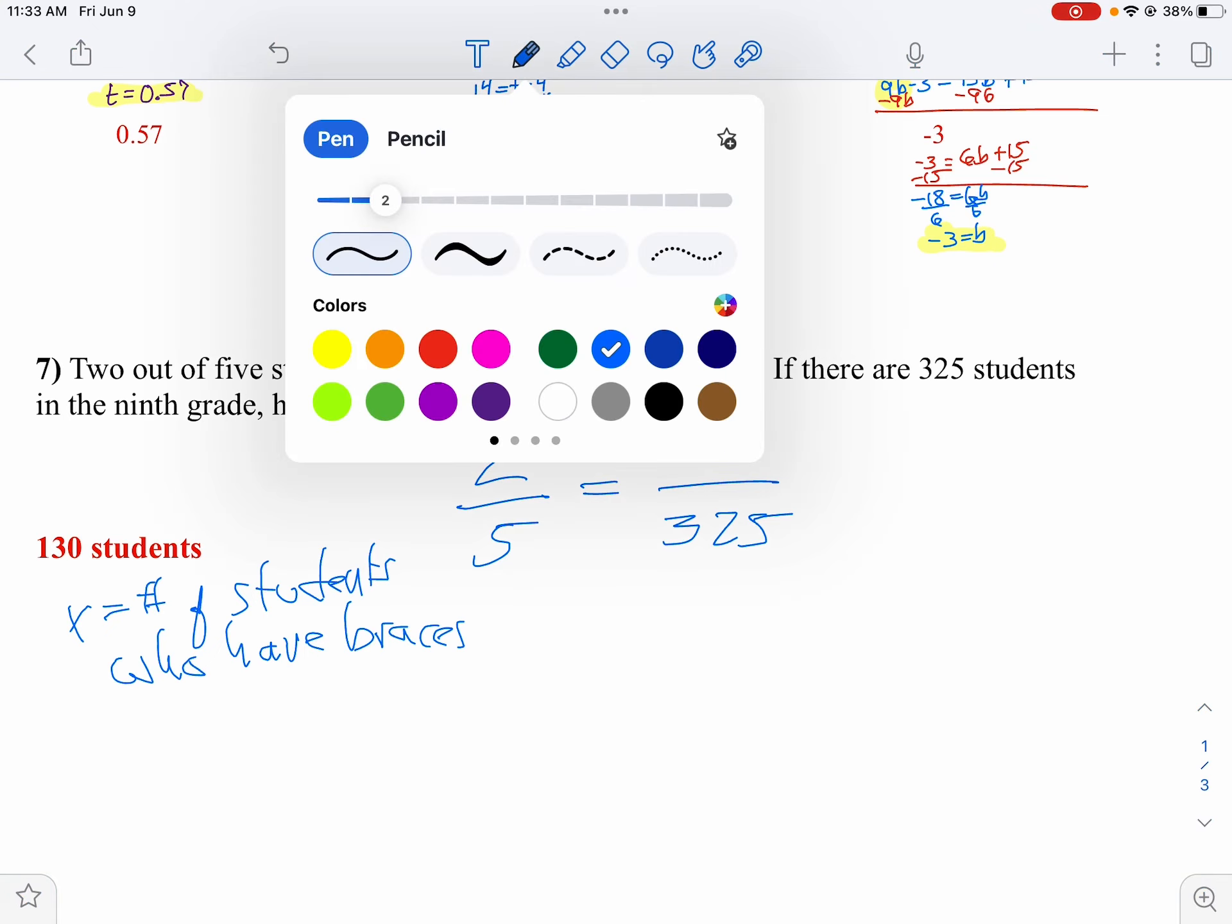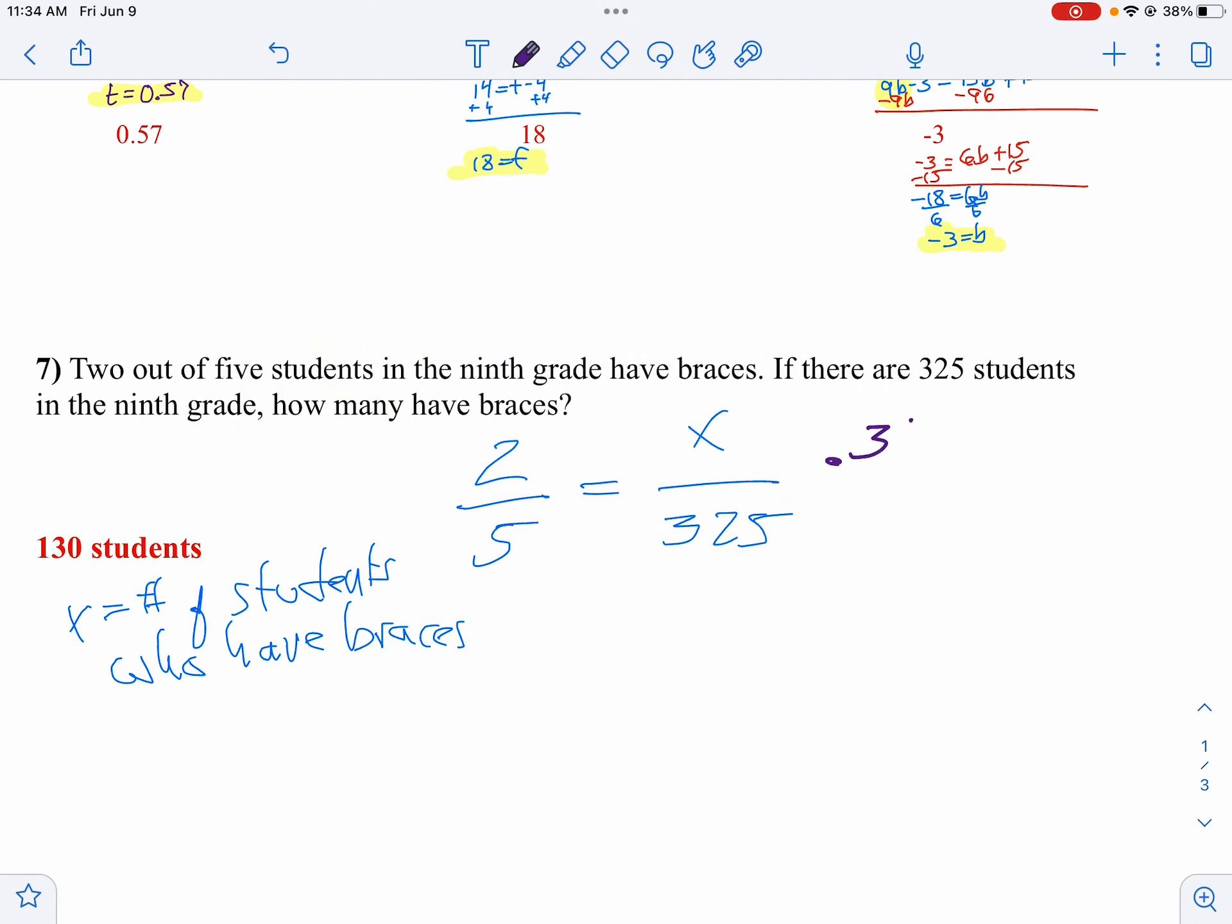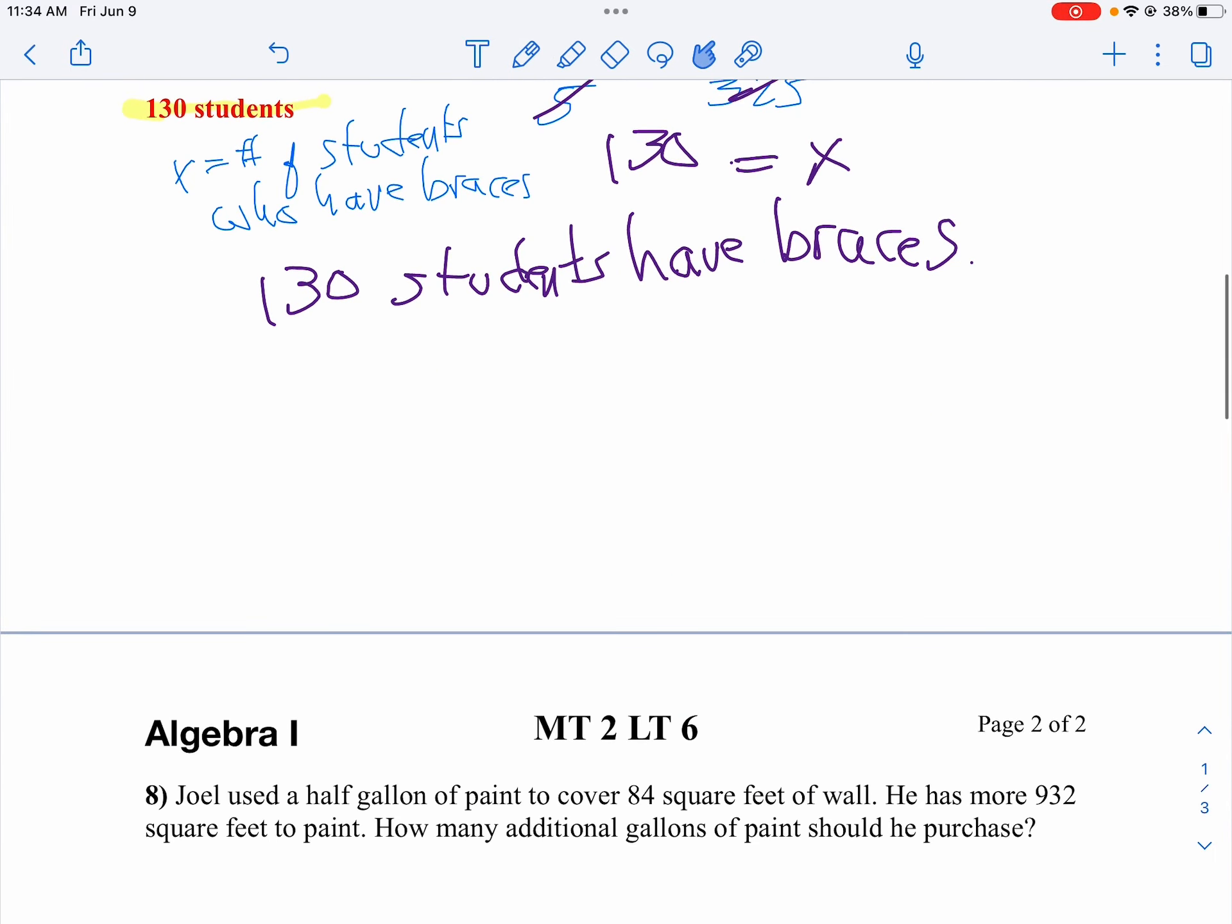And then just solve for x. So I'm dividing by 325, so I multiply both sides by 325. My 325 is reduced, so I get x equals. Notice 5 goes into 325. So I take 325, divide that by 5, I get 65. So 65 times 2 is 130. Since it's an application problem, write it out as a complete sentence. I'd say 130 students have braces. Just writing 130 would be an incorrect answer on a test. You have to give me your answer in a complete sentence.